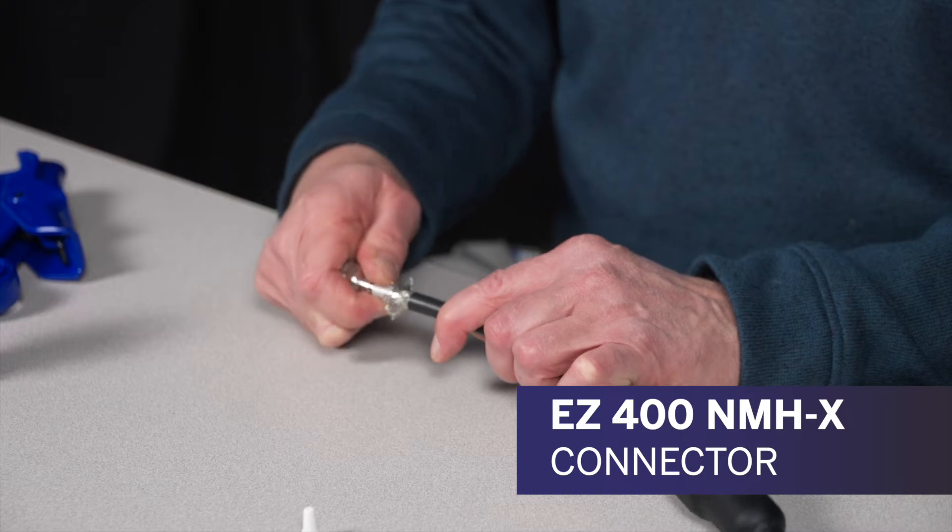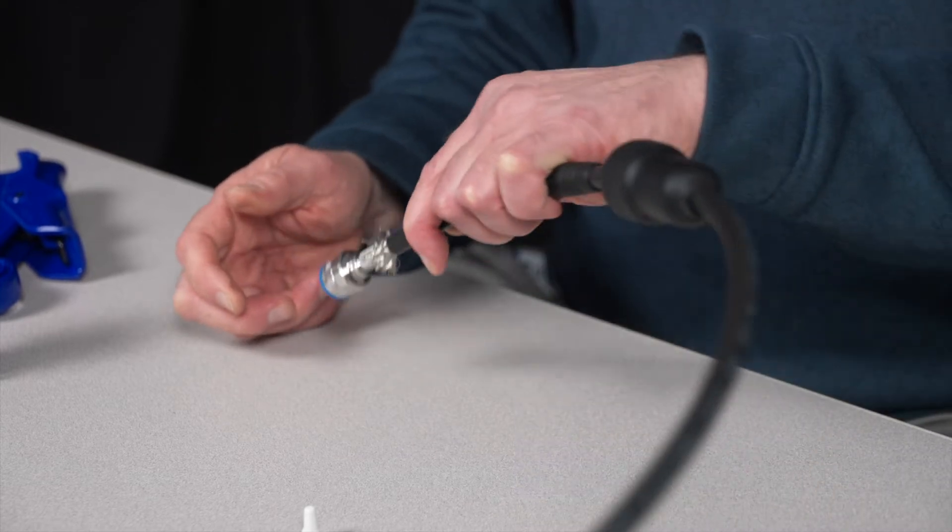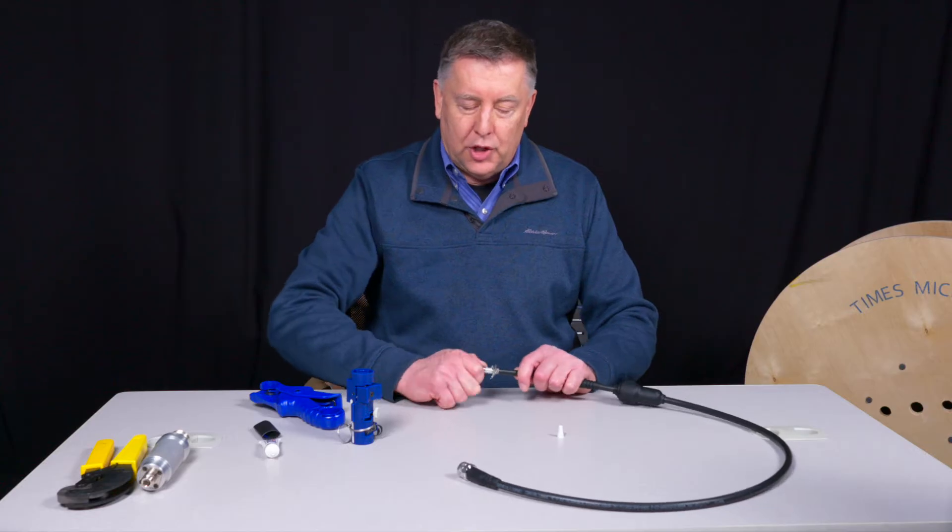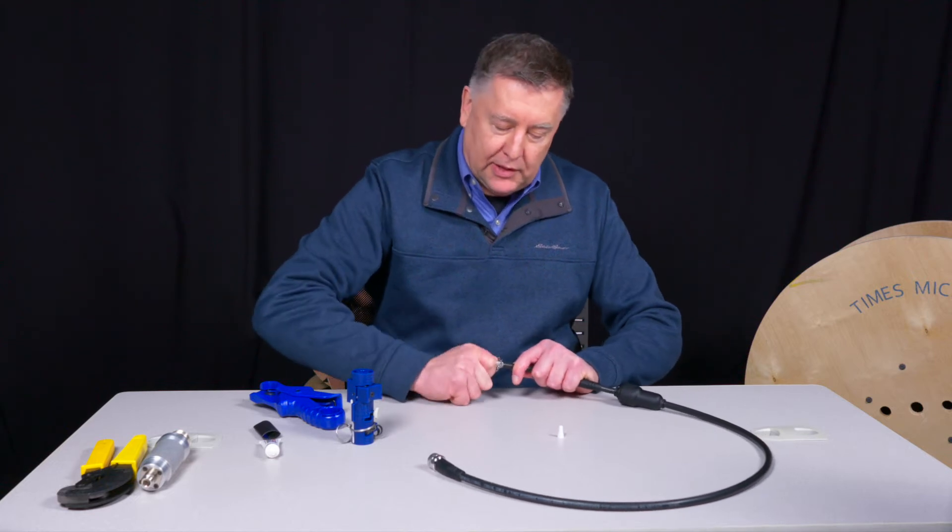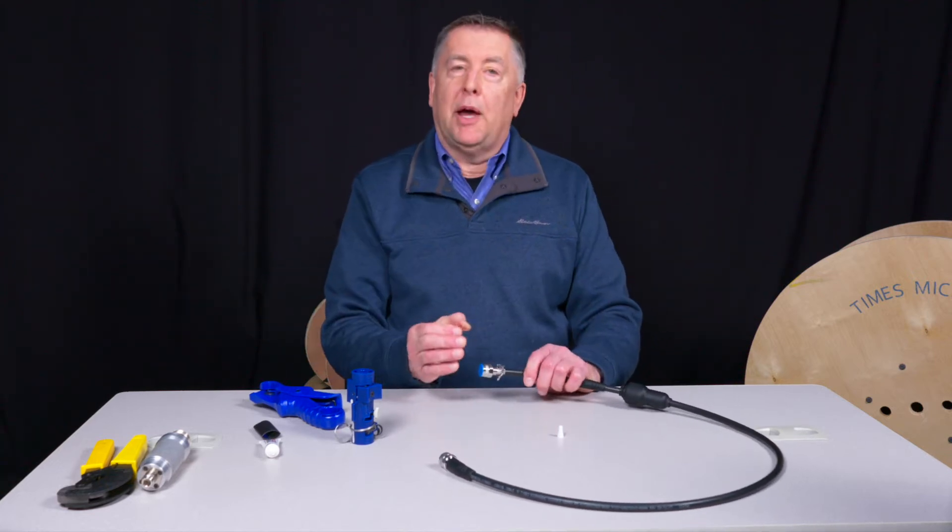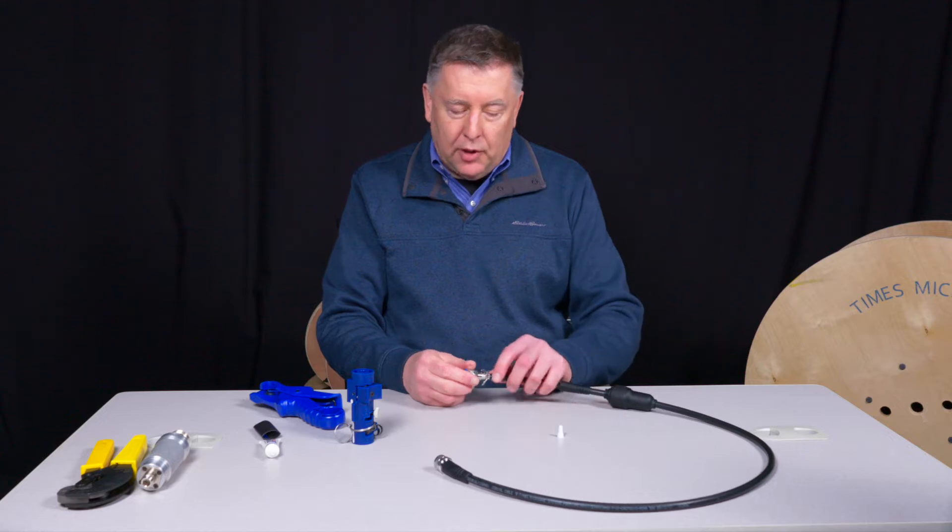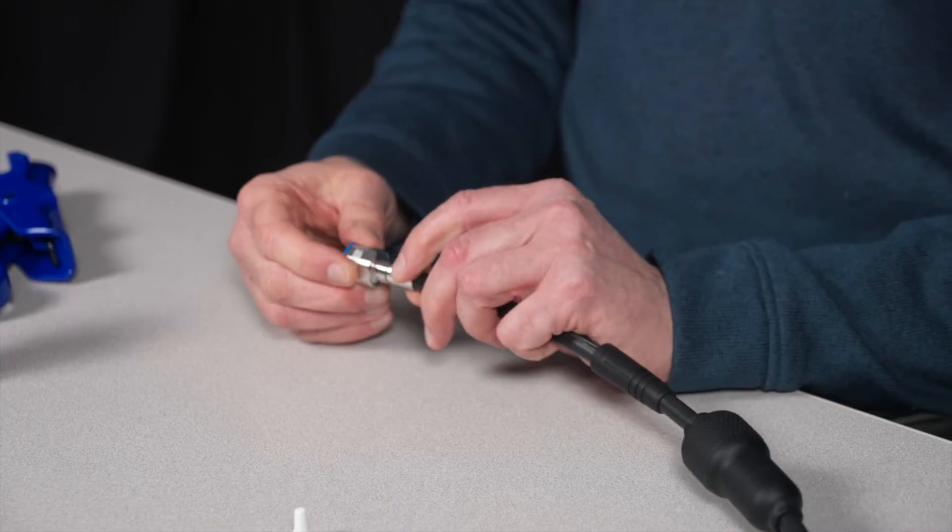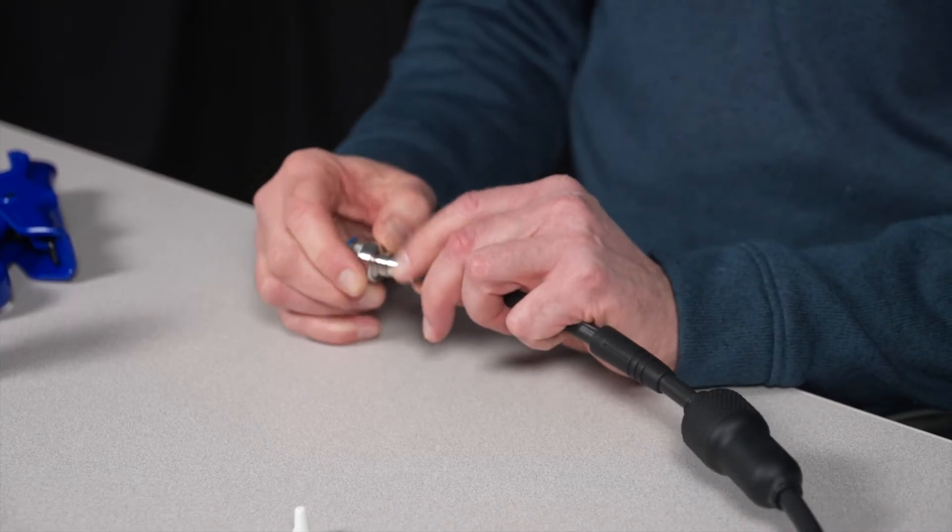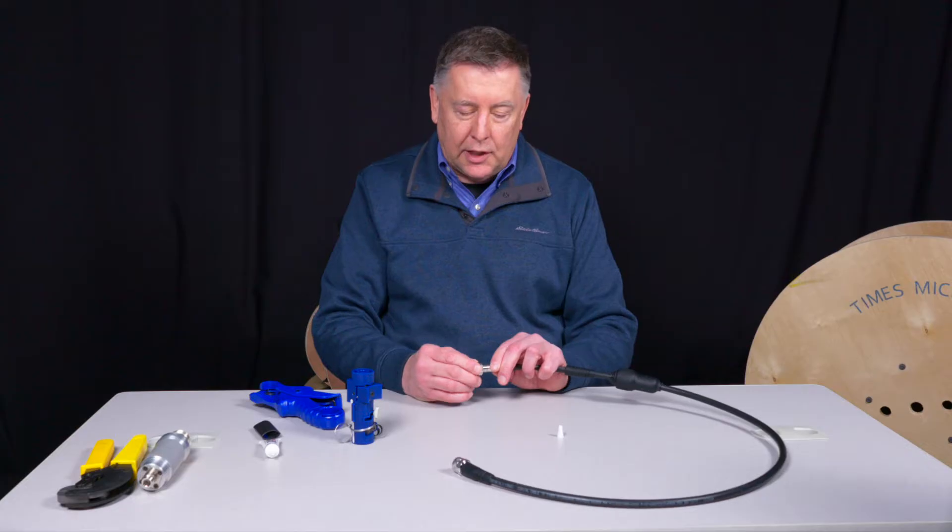You get it started over the outer conductor. It's a nice, snug fit by design. You push it and turn it, and it'll ride right up on the center contact until it bottoms out. Now, you take the ferrule, bring the ferrule forward, and you'll notice the braid wires end up right at the back ring of that connector. That's by design.